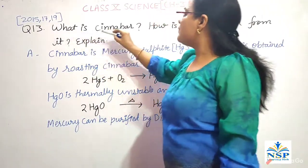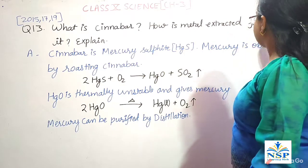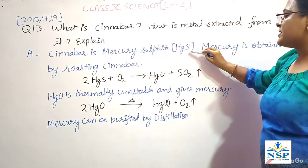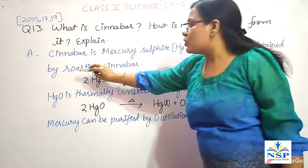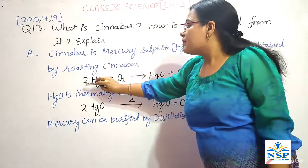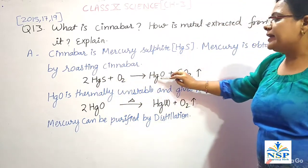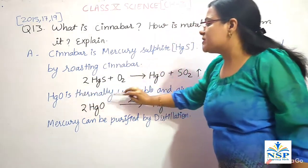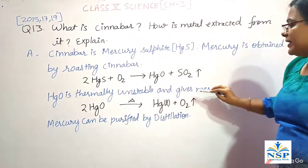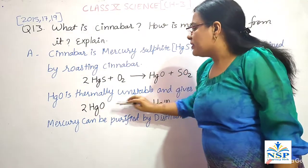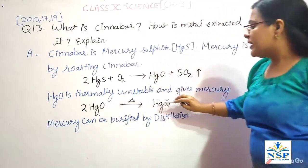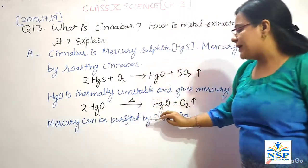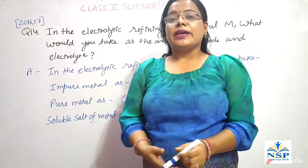Next question: what is cinnabar and how is metal extracted from it? Cinnabar is mercury sulfide (HgS). Mercury is obtained by roasting cinnabar. When mercury sulfide reacts with oxygen, it gives mercury oxide and sulfur dioxide. Mercury oxide is thermally unstable; when mercury oxide is heated, it gives mercury in liquid form and oxygen. Mercury can be purified by distillation.